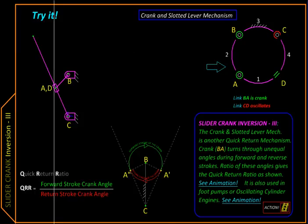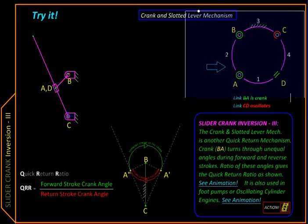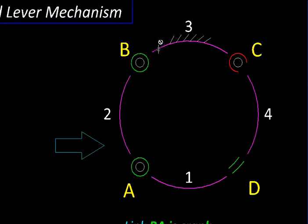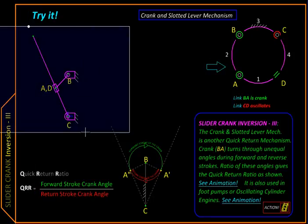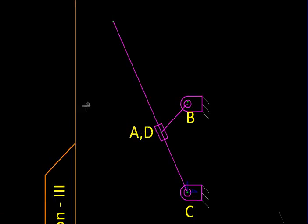Here is its schematic representation. On one side of this fixed link we have a fully rotating pin, so on this side we will get a crank, while on the other side we have a partially rotating pin, so we will get a link which only oscillates. The resulting mechanism looks like this in its bare essential.